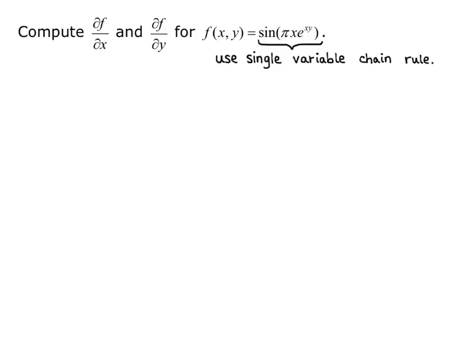To do this, we have to use the single variable chain rule, because we have a function plugged into another function. Remember the single variable chain rule is f prime u times u prime, where u is the function on the inside. So let's identify our outer and inner function: f of u equals sine of u, and u is pi x e to the xy, because pi x e to the xy is plugged into the sine function.